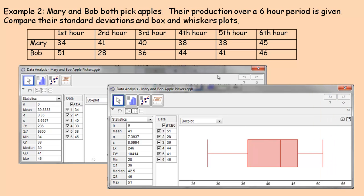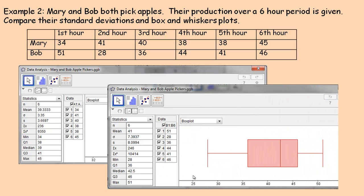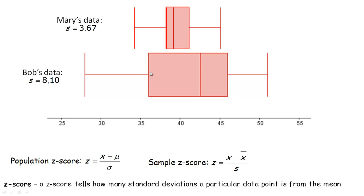It's hard to compare the two box-and-whisker plots because the scales are different, so I'm going to put them on the same scale on the next page. His standard deviation is quite a bit bigger — a little over eight. Here are their two standard deviations and box-and-whisker plots on the same set of axes. Notice that hers is much shorter — her standard deviation is less than half of Bob's. So she's more consistent, while Bob is less consistent or more inconsistent. He can have really low picking times to really high picking times.